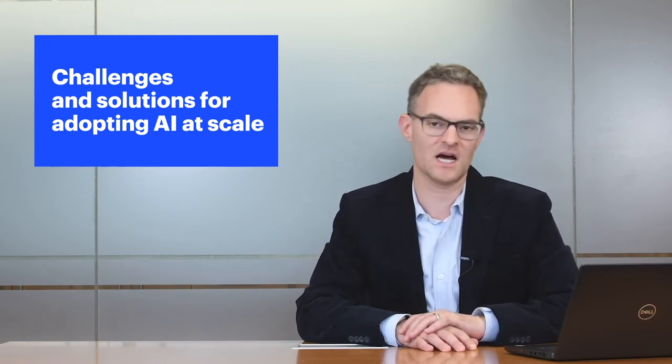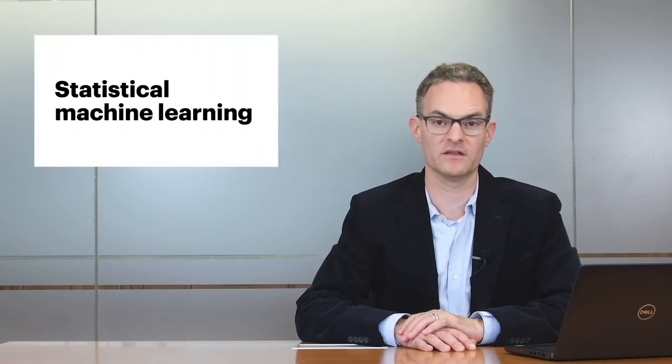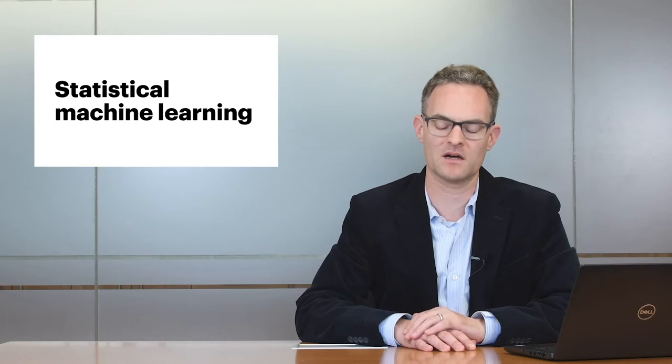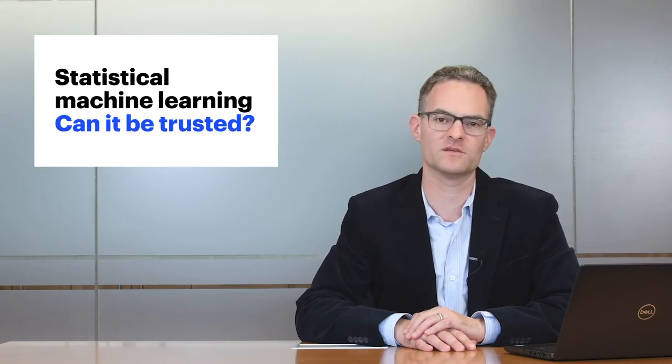The first thing I'd like to introduce you to is a concept called statistical machine learning. This is the dominant way that many AI models are done today. It's a very popular approach to making AI models based on complex regression of data. And one of the questions that comes up here is, how accurate are these approaches?